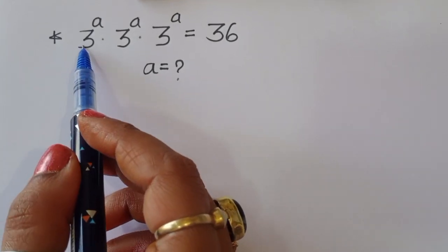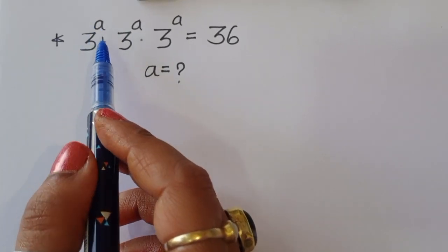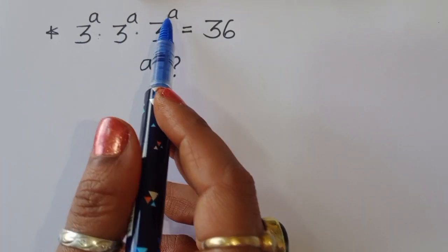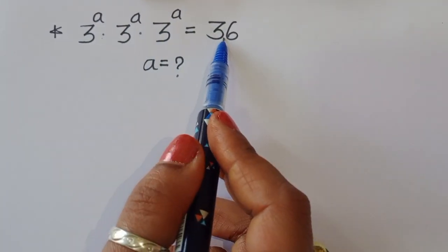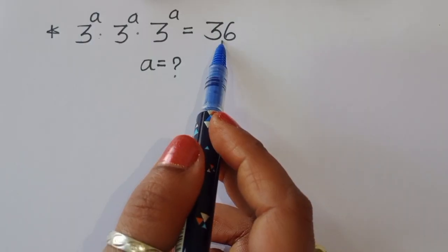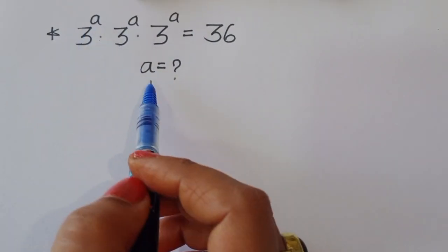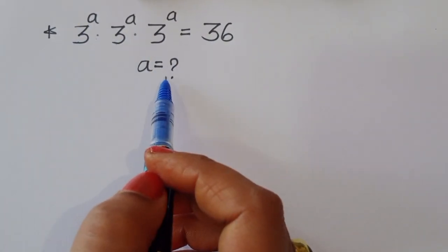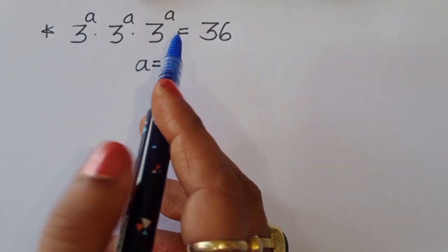The question is: given 3 power A times 3 power A times 3 power A is equal to 36, we have to find out the value of A. Let's see the solution.